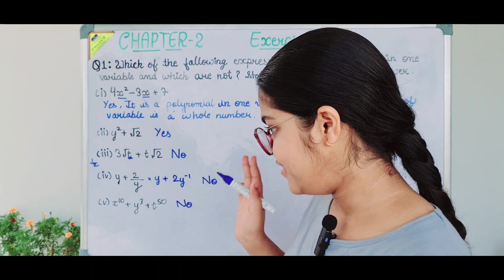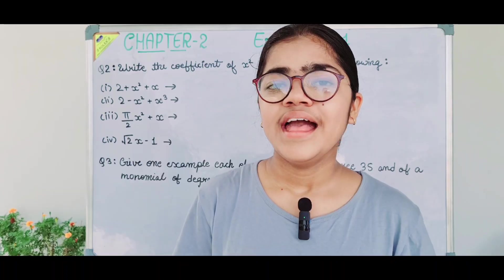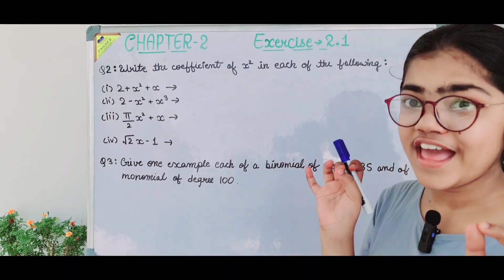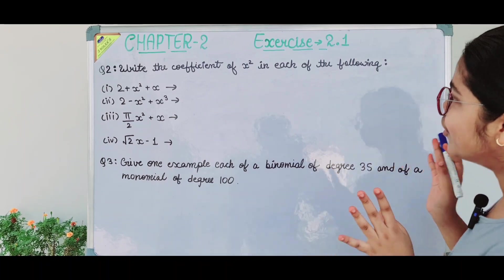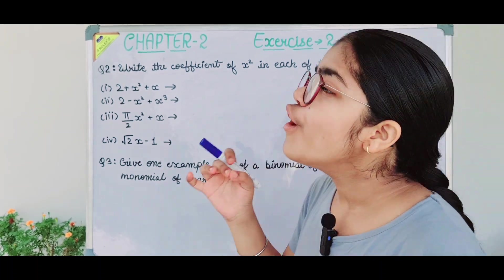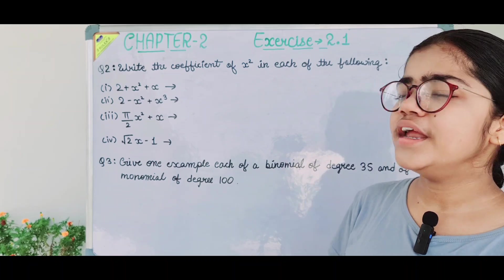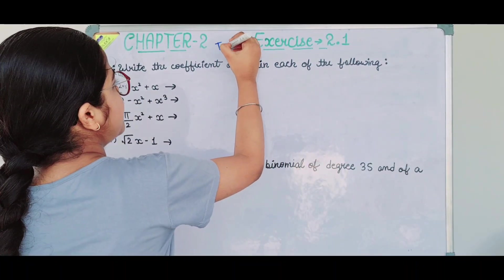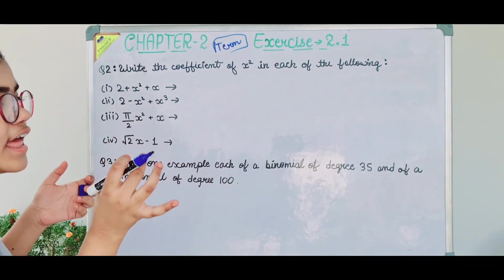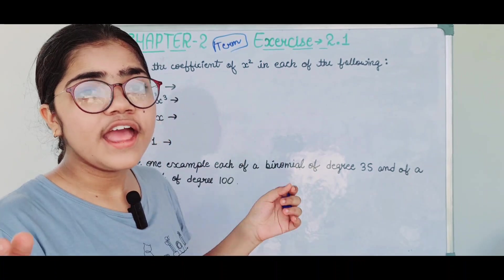Now let's move on to the second question. The question says: write the coefficient of x² in each of the following. So what should we do? Tell the coefficient of x² in each part.